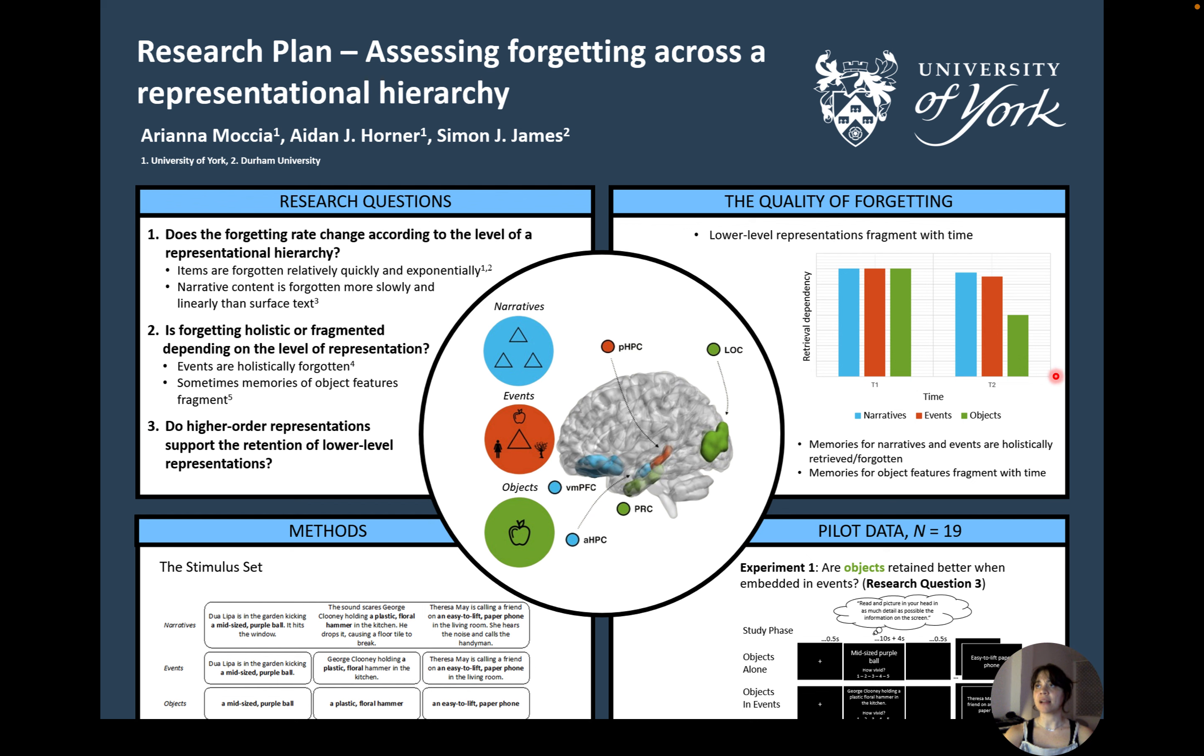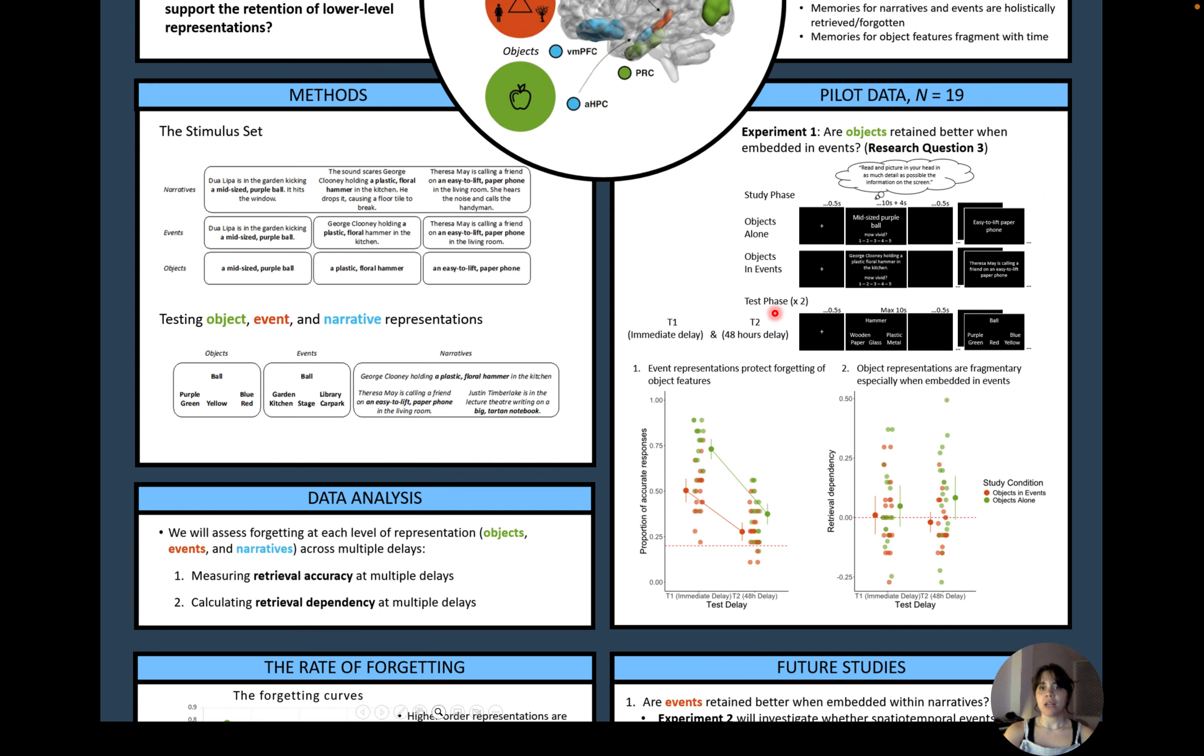In our current experiment, we are investigating whether object information is retained better when objects are encoded and embedded within events, as opposed to being in isolation. Participants are tasked with encoding objects and their features, either in isolation or embedded within event triplets. Memory for these object features is then tested in two forced choice alternative memory tests, one immediately after encoding and the other at 48 hours.